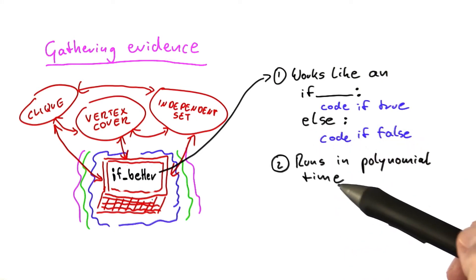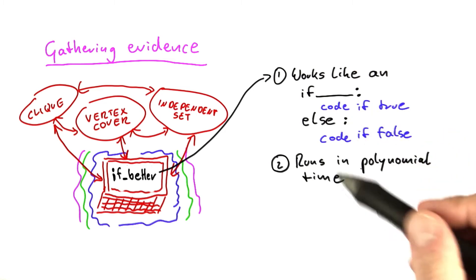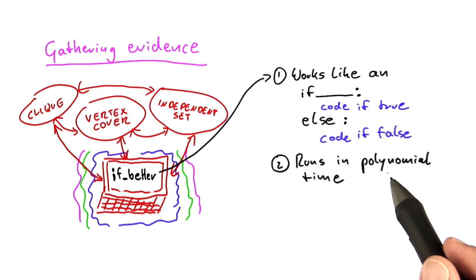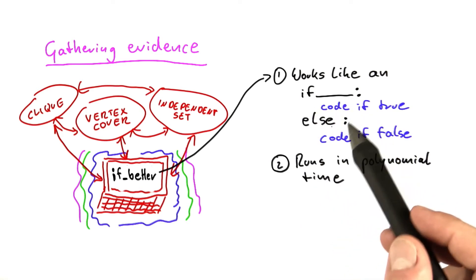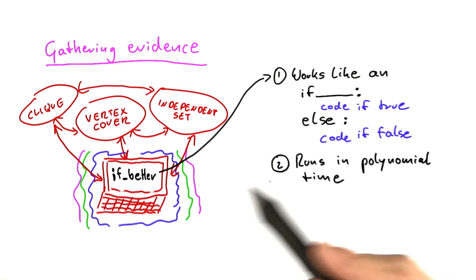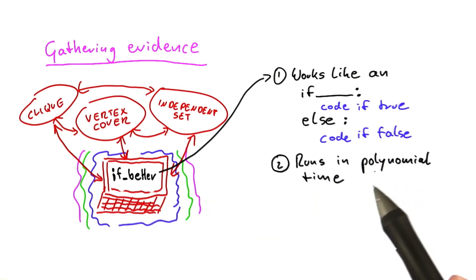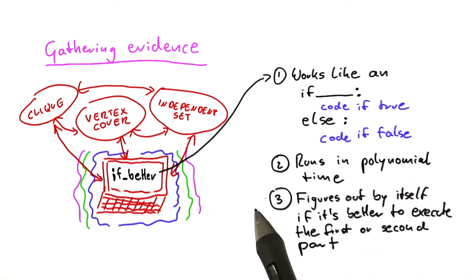The second property is that calling the if better function costs us polynomial time. A normal if-else on the RAM just costs one time step or constant time, but calling this function will cost polynomial time. Now here comes the special property of this function.